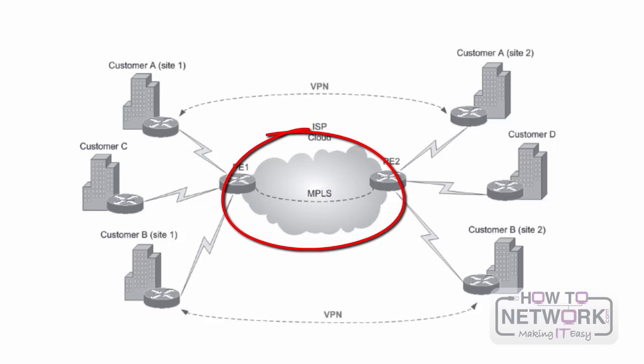When using MPLS VPNs, a stack of labels is used to identify the customer — this is the VPN identification — and another label is used to initiate the forwarding through the ISP cloud. Layer 3 MPLS VPN technology is a very powerful and flexible option that allows service providers to give customers the transparent WAN access connectivity they need, and is very scalable for the ISP because it is very easy for them to add customers and sites.